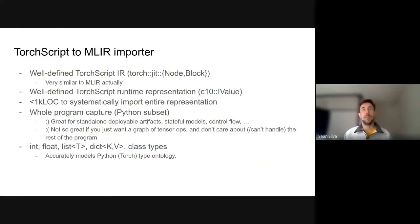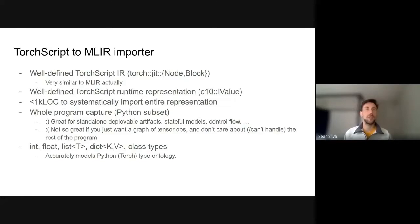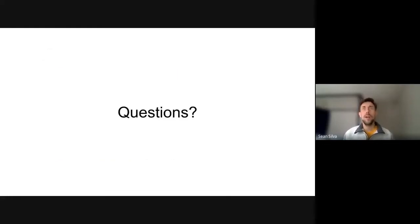TorchScript does have a bit of a downside because it kind of exposes you to the whole program representation. But there's also this other system called lazy tensor, which avoids that for use cases that can tolerate that different set of tradeoffs. We have custom types that model all the Python types — lists, dictionaries, ints, etc. — which we're able to just import directly. It's actually quite nice; we don't have to do very much bridging at all.